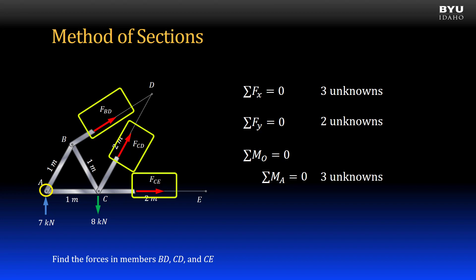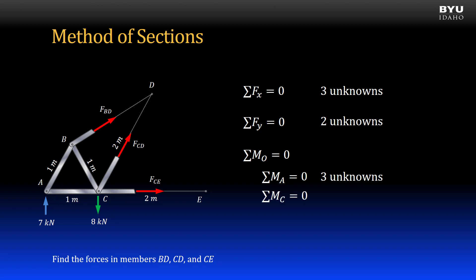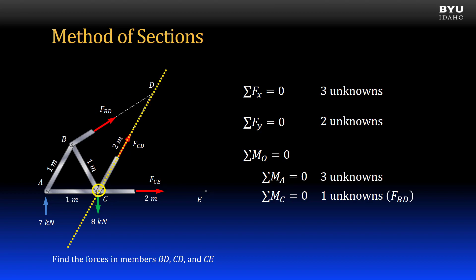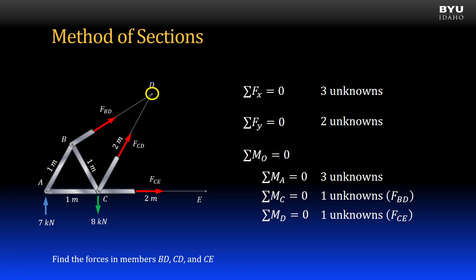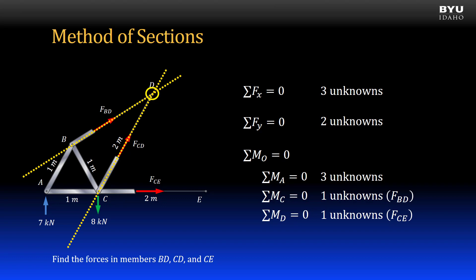However, if I sum moments about point C, there will be only one unknown — force BD — because the lines of action for force CD and force CE pass through point C. I can also be clever and sum moments about point D, and there will be only a single unknown: force CE, because the lines of action for forces BD and CD pass through point D. The strategy is to find a point to sum moments to zero so that you can isolate a single unknown. That point does not have to be on the truss — just look for points where force lines of action intersect.